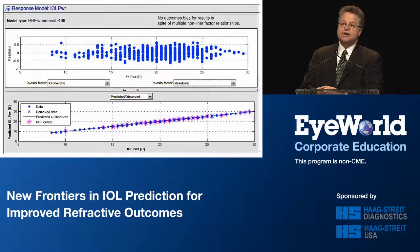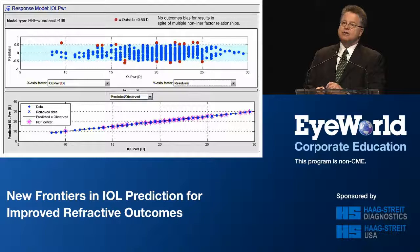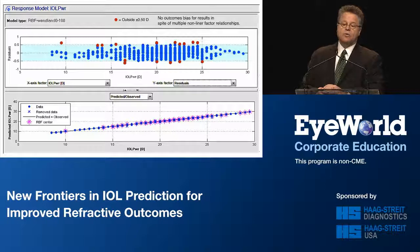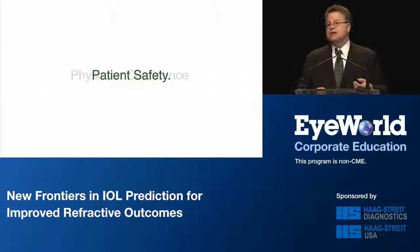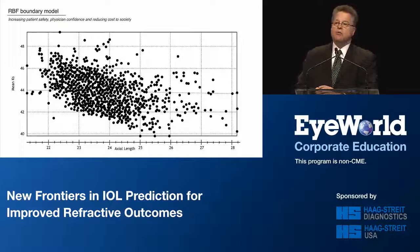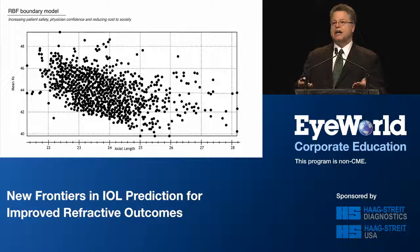This is where things begin to get interesting. Looking at about 650 cases, we've taken a cloud of data and turned it into a straight line — our half-diopter accuracy — with no calculation bias. The number of out-of-bounds points clusters only with number of cases, not axial length. This is the first time we have something where it doesn't really matter what the axial length is. In engineering, there's a concept called a boundary model — a way of taking pairs of data and determining what accuracy will be before the calculation is done.